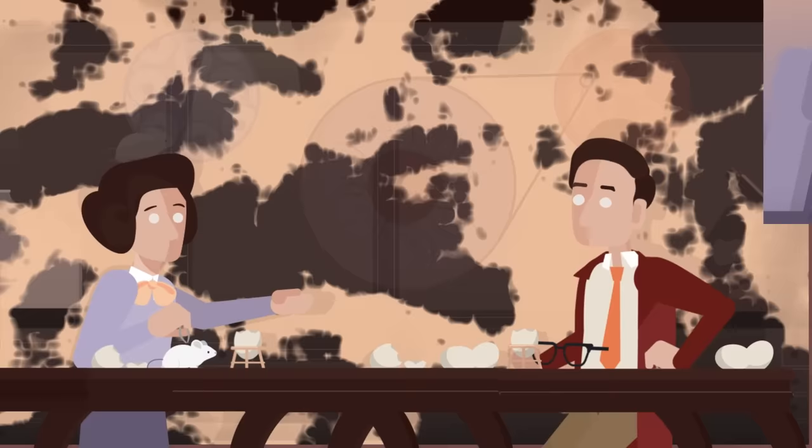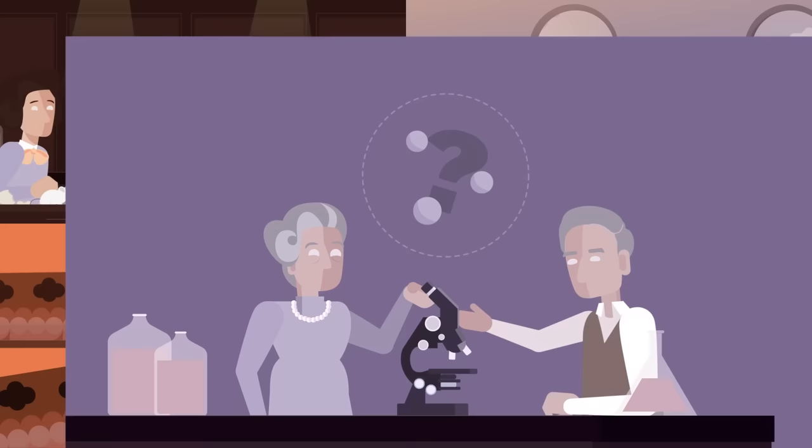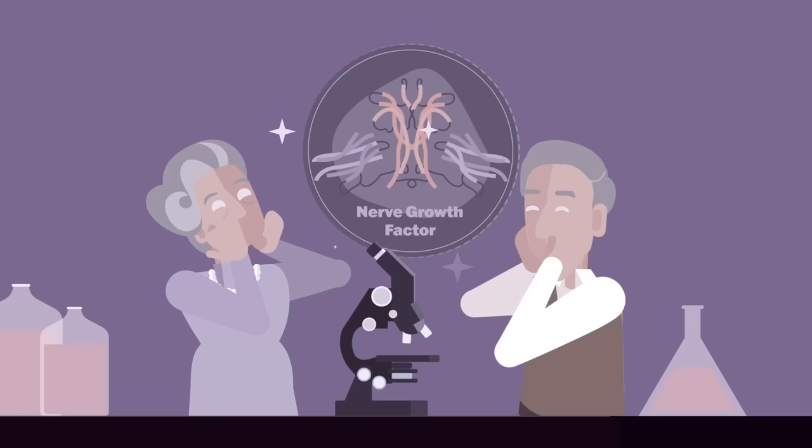Following years of experiments, with tenacity, a bit of luck, and great help of a skilled biochemist Stanley Cohen, the substance was finally isolated. They called it nerve growth factor, and it turned out to be the first in a family of proteins, the growth factors, which regulate all healthy development.